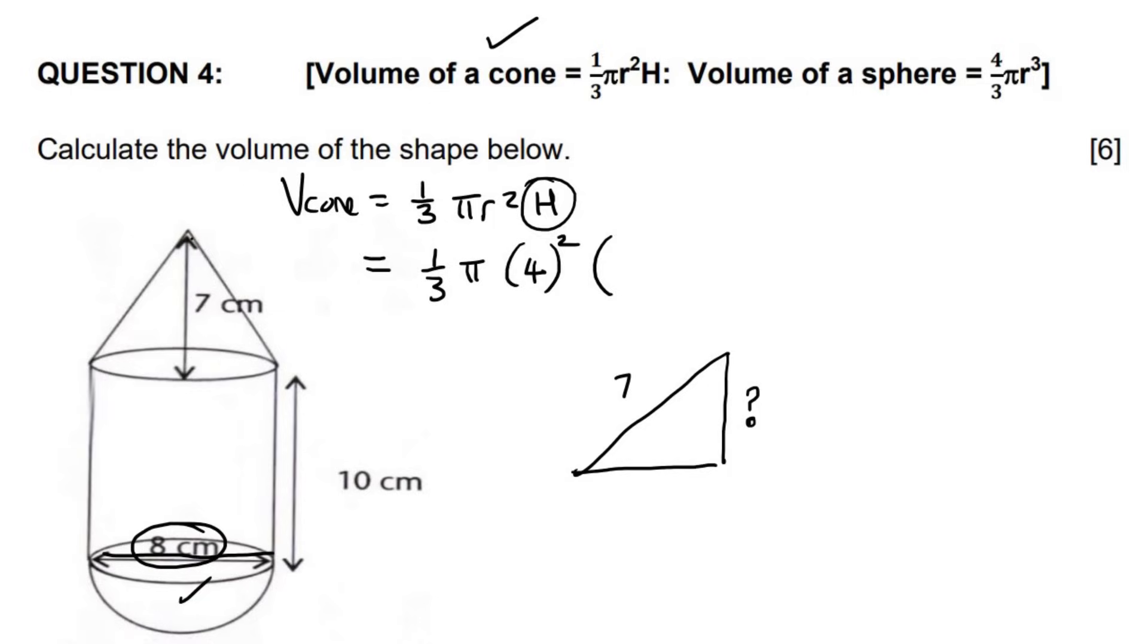So we need to know this length. Now, that length is just going to be four. Why do I say that? Because this is a circle, and we know that the diameter of that circle is eight, so if you go from the middle, then it would only be four centimeters. And so we could then use Pythagoras to find this length over here.